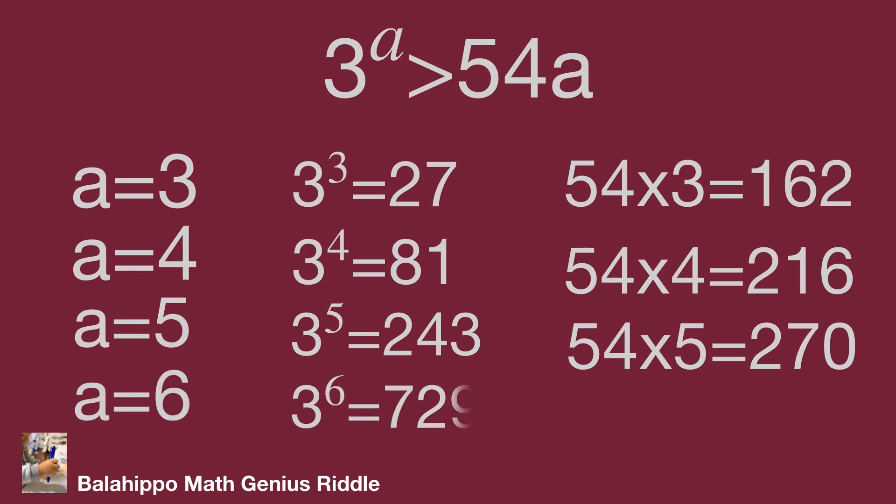When a equals 6, then 3 power 6 equals 729. 54 times 6 equals 324. 729 is larger than 324. So when a is larger than 6, we get 3 power a larger than 54a.